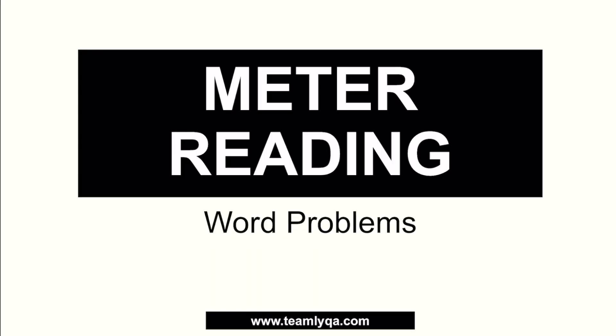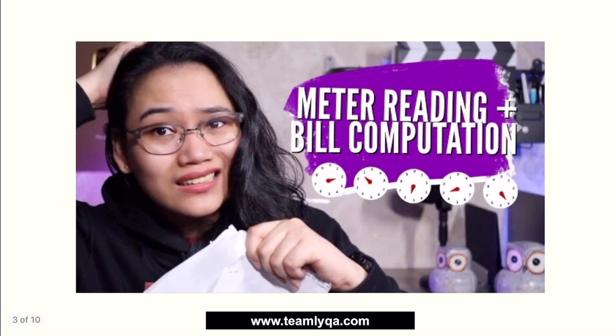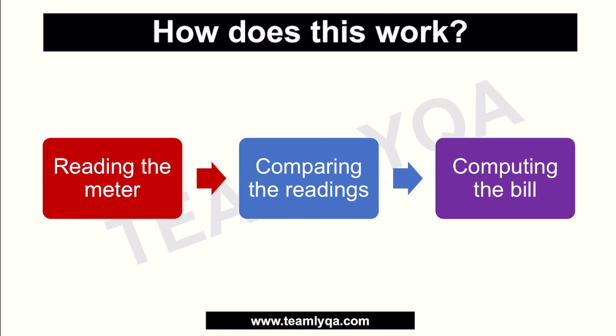So this is our meter reading lesson, but it's advanced — we're going to talk about word problems involving this kind of information. If you haven't seen Part 1 of the video, go ahead and click the 'i' button at the top or the link in the description box. It's important to understand it first before we proceed. In a nutshell, the process works like this: you first read the meter to get the numbers, then compare the readings from the past month to the current reading, and then compute the bill.